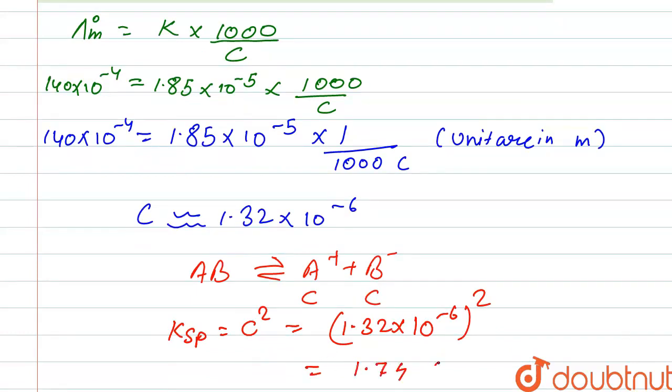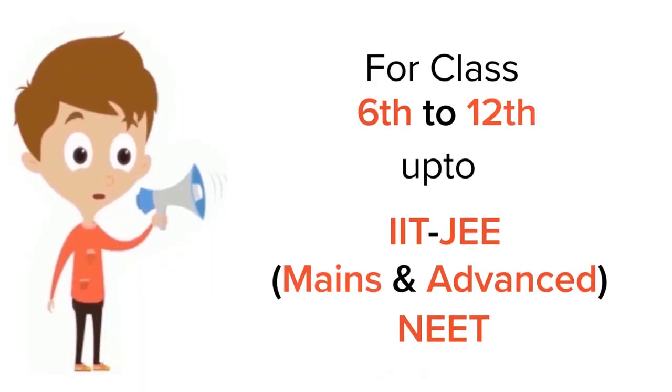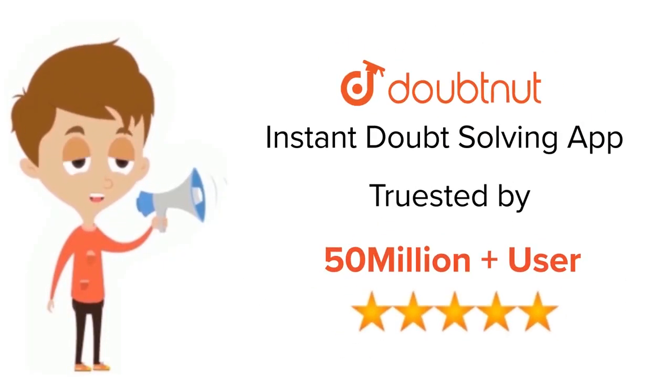...1.74 × 10^-12. So this is the value of solubility product and our correct option is option second. Thank you.